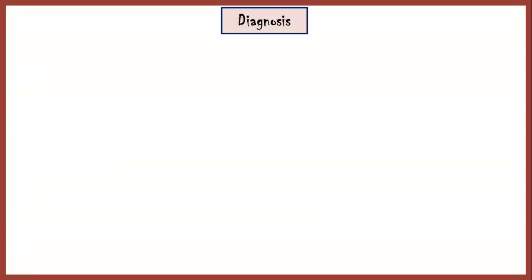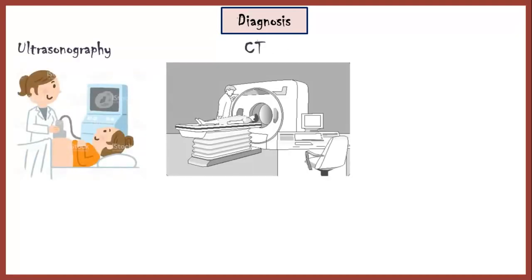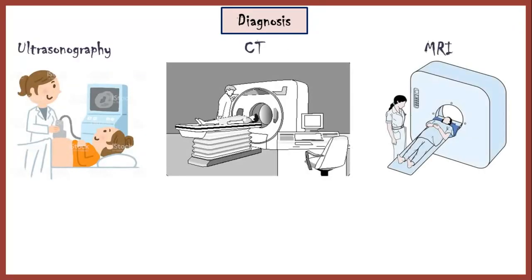Diagnosis is mainly based on imaging studies, including ultrasonography, CT scanning, and MRI scanning. Ultrasonography is useful in detecting Dandy-Walker malformation before birth.